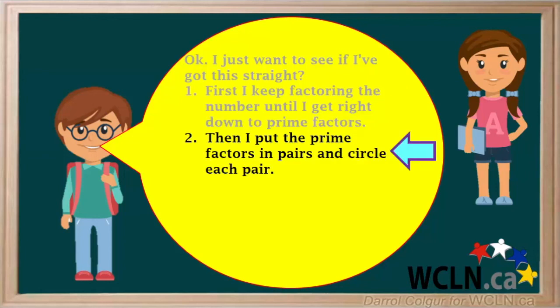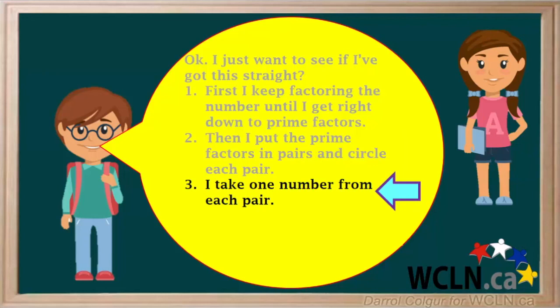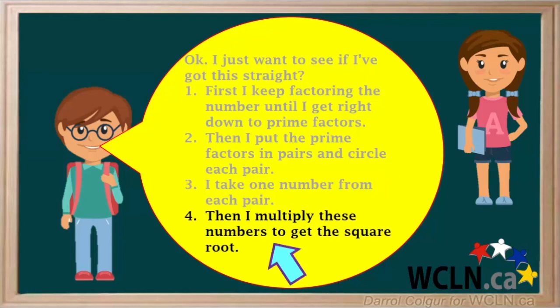Then we group the prime factors into pairs and circle each pair. Then we take one number from each pair and write it below the pair. And multiply these numbers. This gives us the square root of the original number.